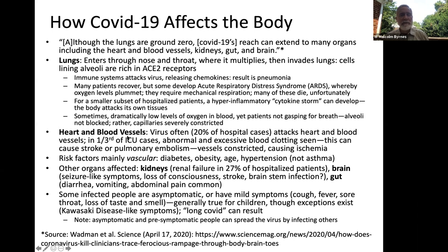In heart and blood vessels: the virus often, in about 20% of hospital cases, attacks the heart and blood vessels. In one-third of ICU cases — studies done in China during the pandemic — abnormal and excessive blood clotting is seen, which can cause stroke or pulmonary embolism. Blood vessels are constricted, causing ischemia. The risk factors for the disease are mainly vascular: diabetes, obesity, age, hypertension — but interestingly not asthma, although lung disease is a risk factor.